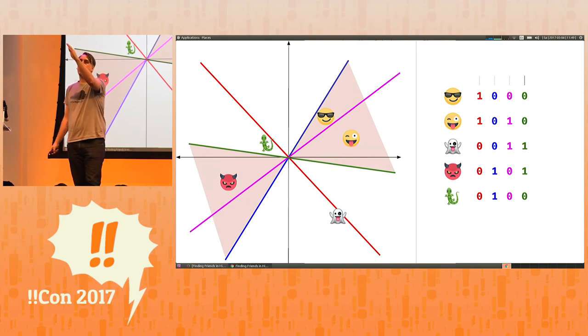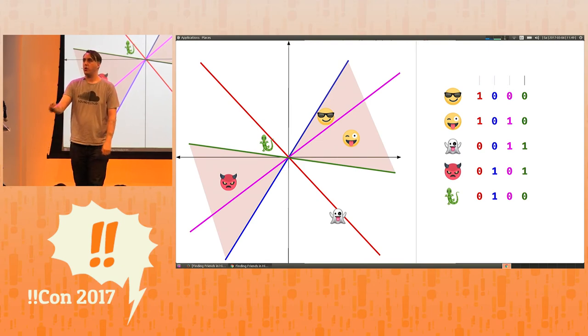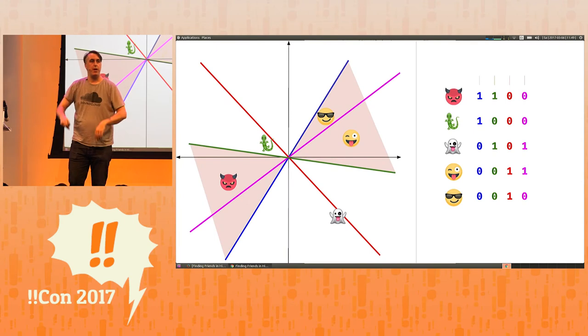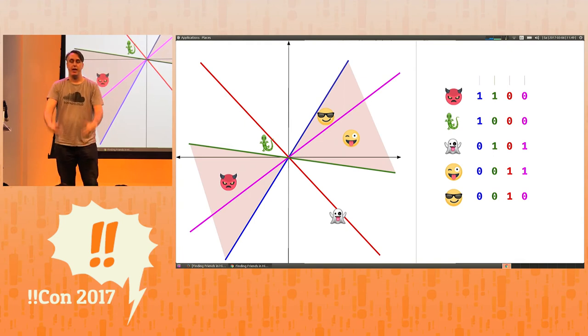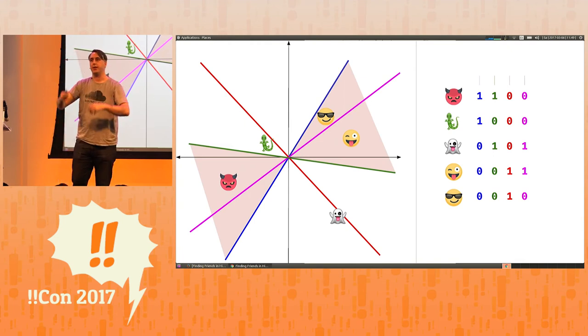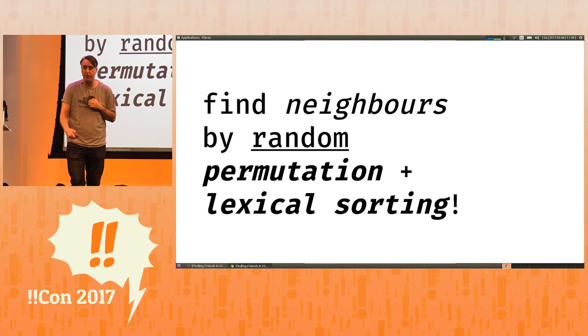We can do this for another bucket. Here is the bucket spanned by the blue and green line. And because we chose these lines randomly in any order, we can permute them in any order. And so we just go and permute them, lexically sort them, and we see here that emoji in the same bucket are nearest each other. And we can keep doing this random permutation of bits and lexical sorting to find candidates. And this becomes our locality-sensitive hashing algorithm.